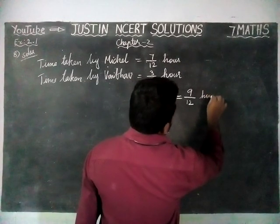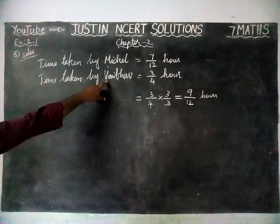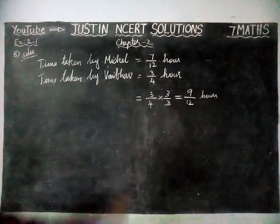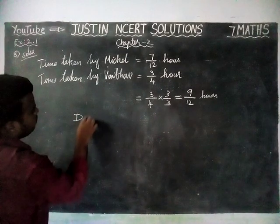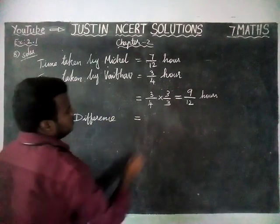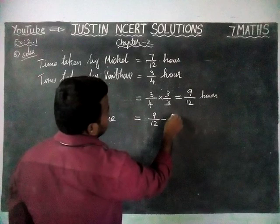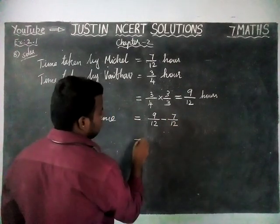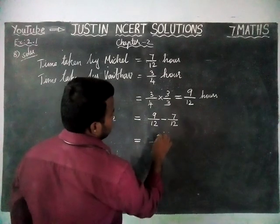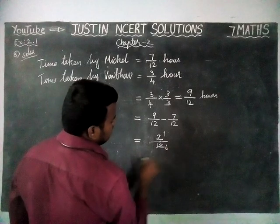Now we can compare. Vibov took longer time. To find by how much, we find the difference: 9/12 minus 7/12. The denominators are the same, so 9 minus 7 equals 2, giving us 2/12. We can simplify this to 1/6 hours.